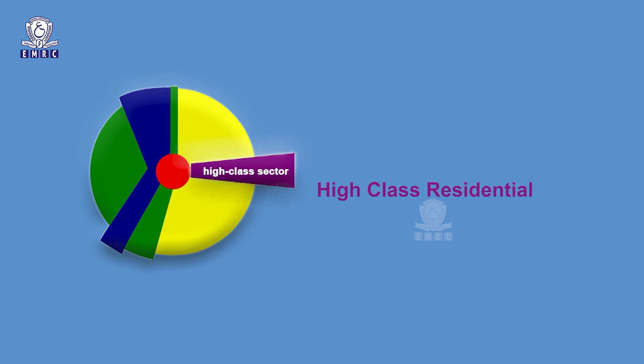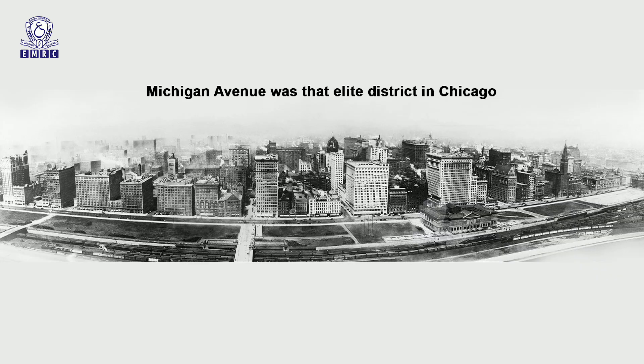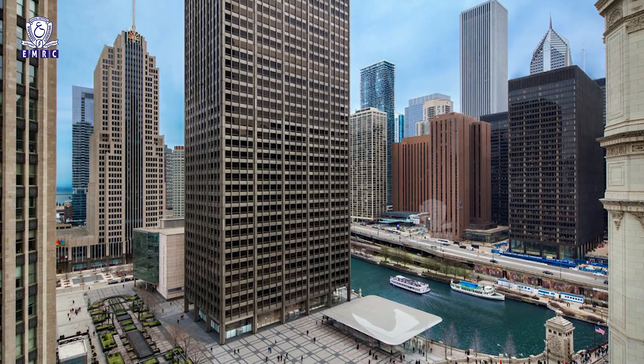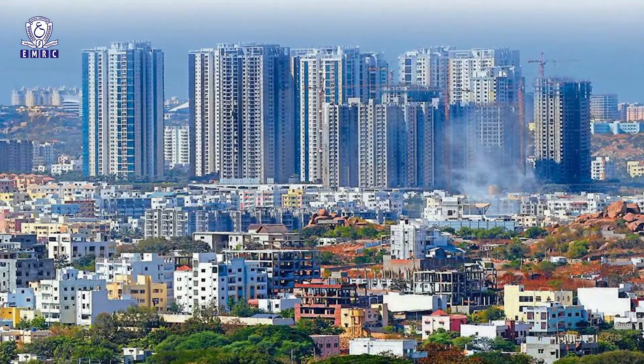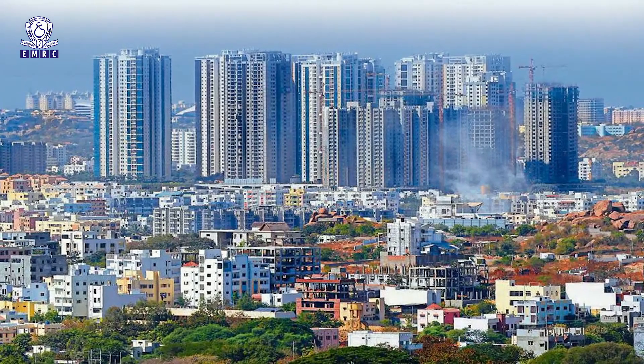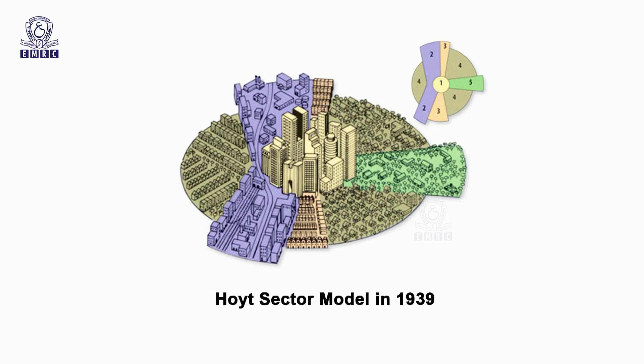The high class residential sector is the outermost and farthest area from downtown. Hoyt's model identifies an elite zone for upper class people, where wealthy and affluent residents enjoy quiet, clean areas with less traffic. Michigan Avenue was that elite district in Chicago. There is also a corridor that extends from the central business district to the edge of the city where prime real estate is found. In many cities the high class district is on the west side where prevailing winds enter the city and are upwind from industrial zones, which are dirty and smelly. It is unlikely that high class residential housing would be found near factories or lower class housing areas, and in this way Hoyt's model suggests a distinct physical separation between the wealthy and the poor.